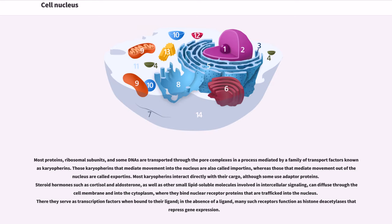Most proteins, ribosomal subunits, and some DNAs are transported through the pore complexes in a process mediated by a family of transport factors known as karyopherins. Those karyopherins that mediate movement into the nucleus are also called importins, whereas those that mediate movement out of the nucleus are called exportins. Most karyopherins interact directly with their cargo, although some use adapter proteins. Steroid hormones such as cortisol and aldosterone, as well as other small lipid-soluble molecules involved in intercellular signaling, can diffuse through the cell membrane and into the cytoplasm, where they bind nuclear receptor proteins that are trafficked into the nucleus. There they serve as transcription factors when bound to their ligand. In the absence of a ligand, many such receptors function as histone deacetylases to repress gene expression.